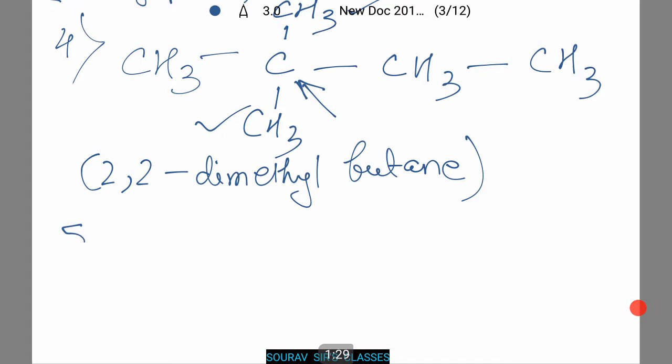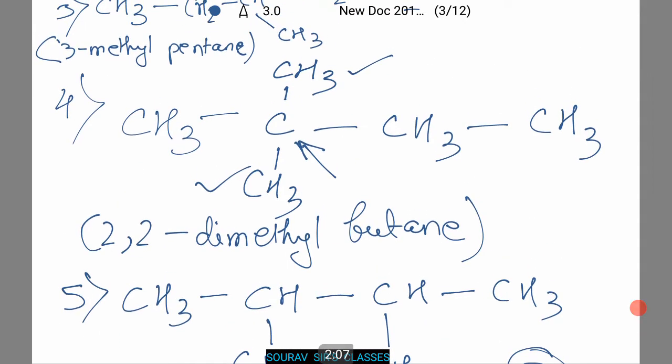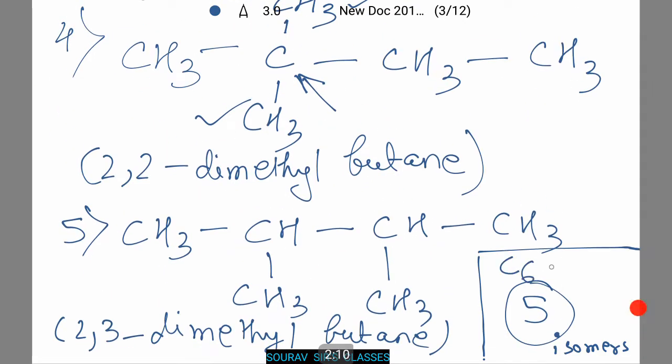Now let's see whether we can have any more isomers or not. CH, CH, let's put one methyl group out here, CH3, CH3. Therefore this compound is known as 2,3-dimethylbutane. Thus the answer to our question is there will be total 5 isomers of the chemical formula C6H14. Let's see another question.